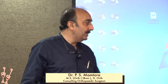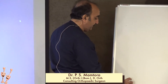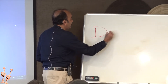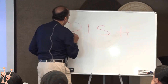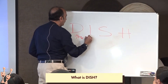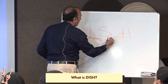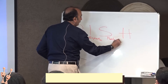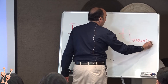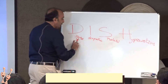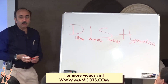DISH is Diffuse Idiopathic Skeletal Hyperostosis. As the name suggests, it is diffuse, it is idiopathic, it is skeletal, and hyperostosis means new bone formation.